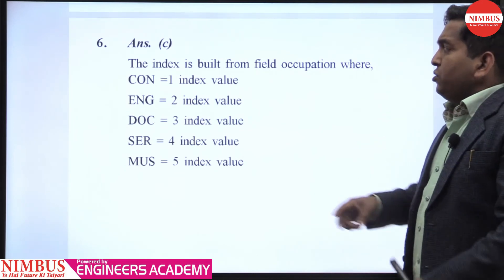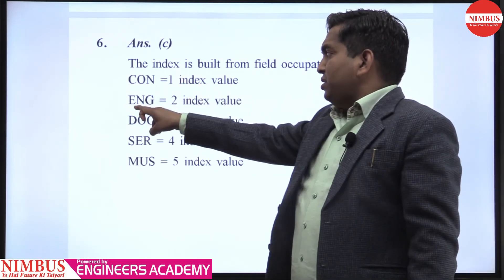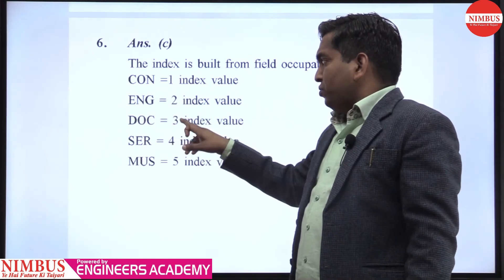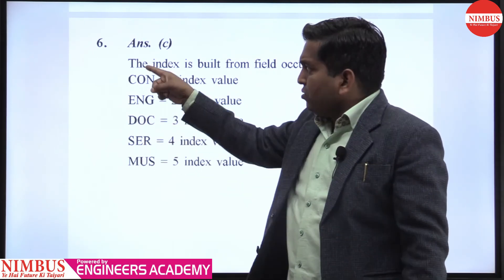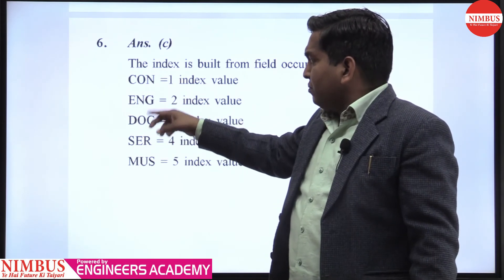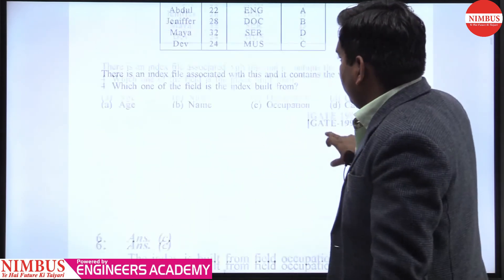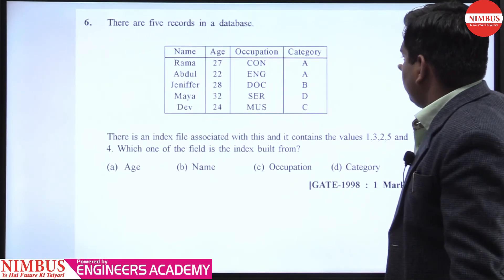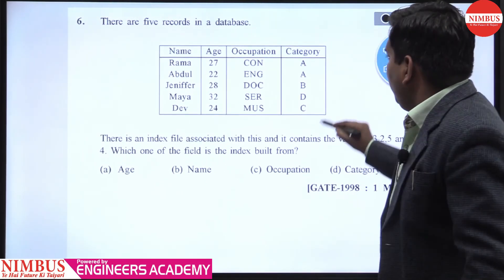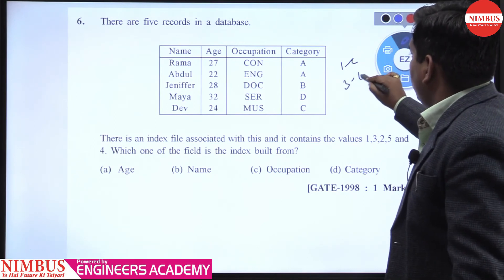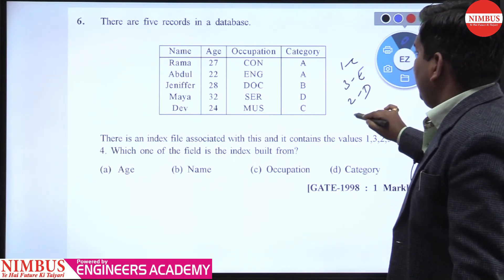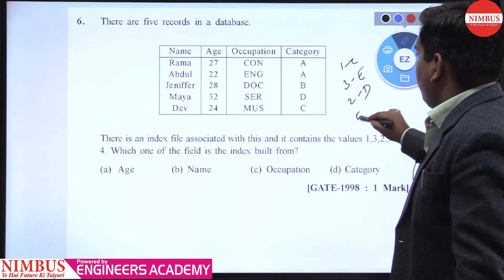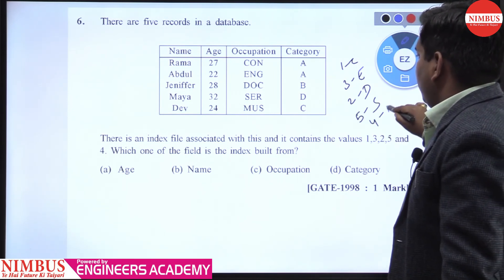So this is the solution: the index is built from the occupation, where CON equals 1, ENG equals 2, DOC equals 3. You can also see in alphabetical order: C-D-E. Here you can see directly one for C, three for E, two for D, five for S, and four for M.